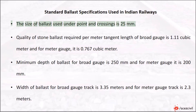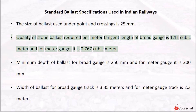Standard ballast specifications used in Indian railways: The size of ballast used under points and crossings is 25 mm. Quality of stone ballast required per meter tangent length of broad gauge is 1.11 cubic meter, and for meter gauge it is 0.767 cubic meter.